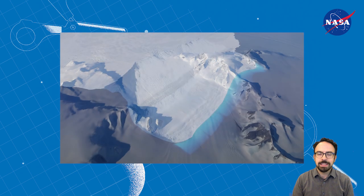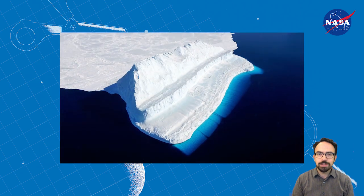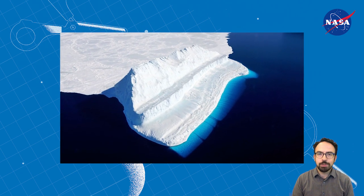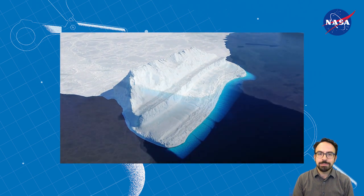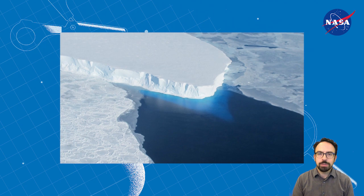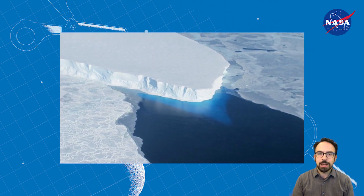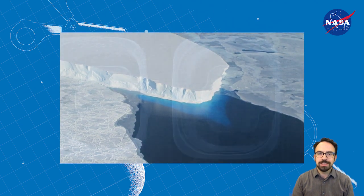Now think about that ice as it melts and predict which type of ice — land ice or sea ice — will add more to sea level rise while the ice melts. With your prediction in mind, let's get started setting up your experiment.